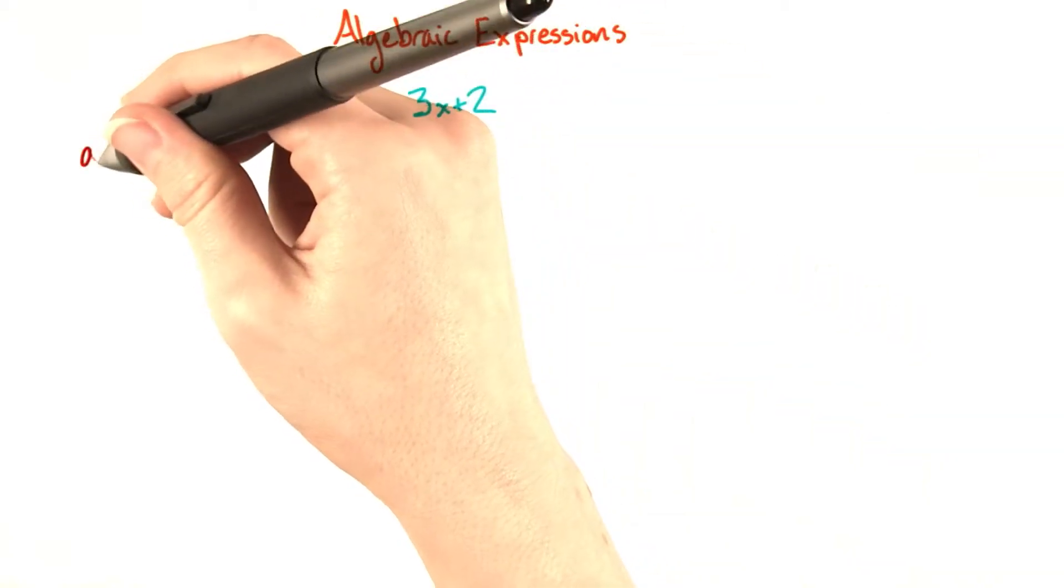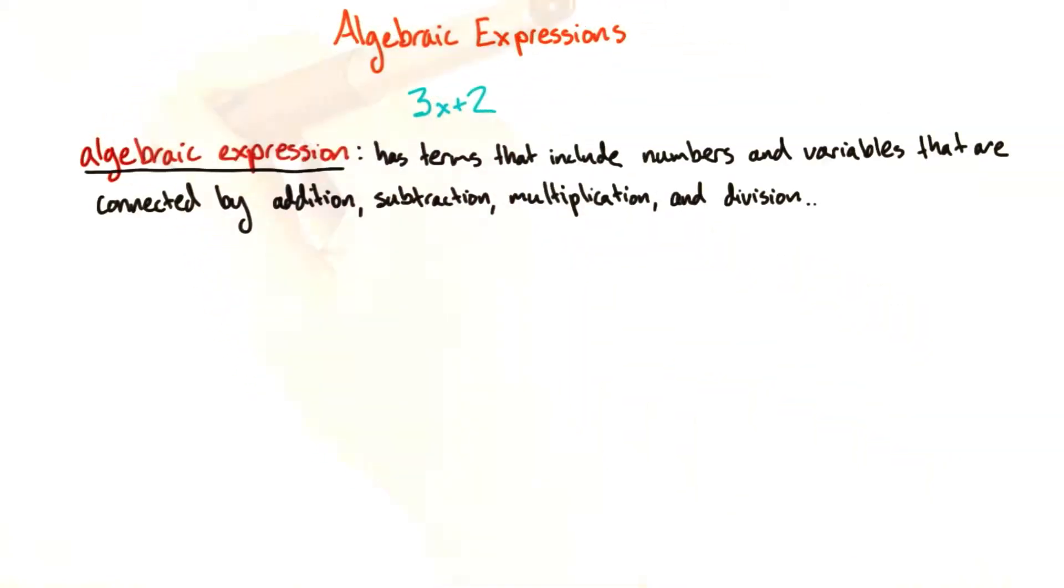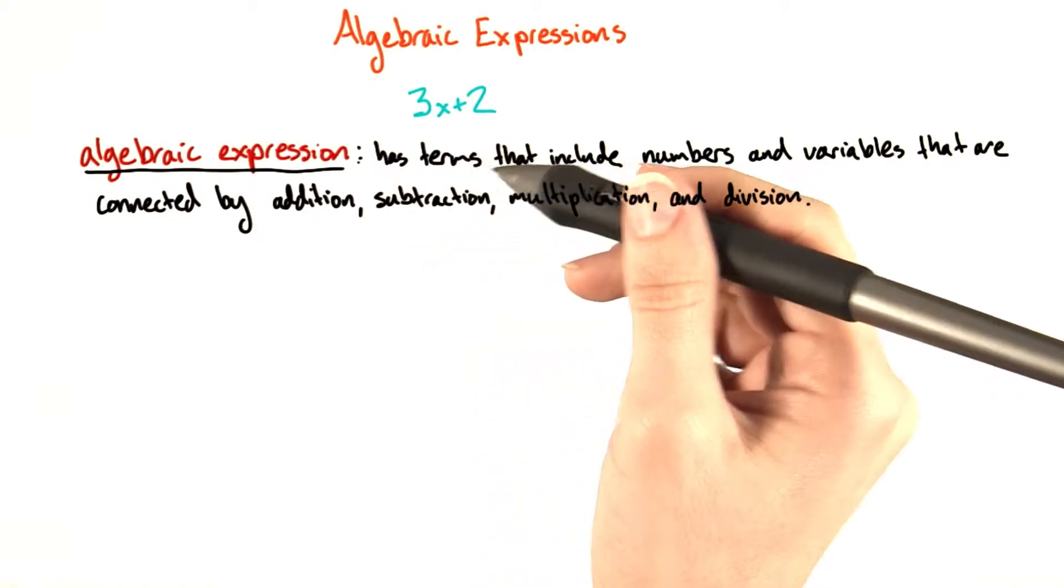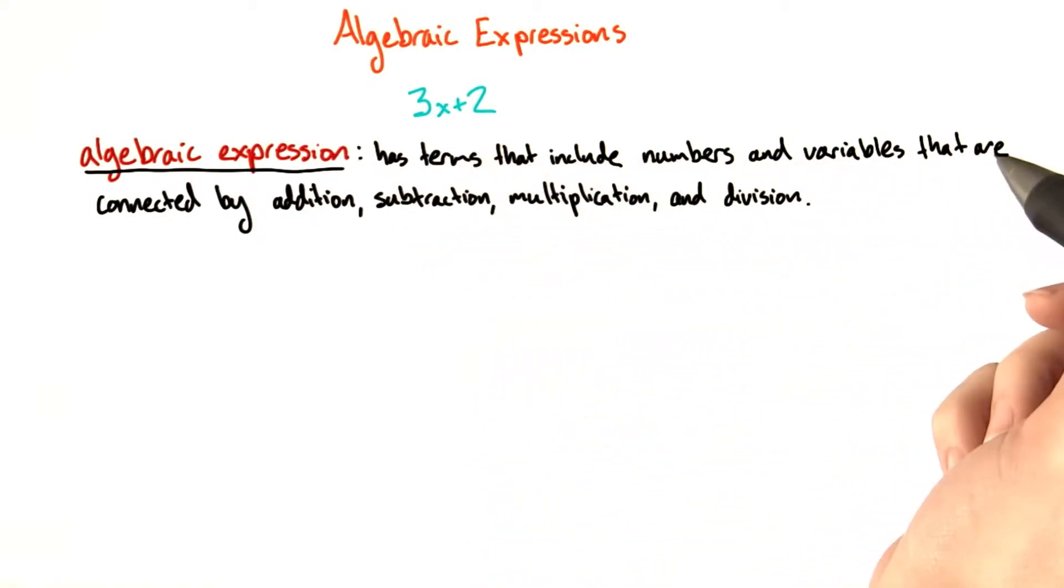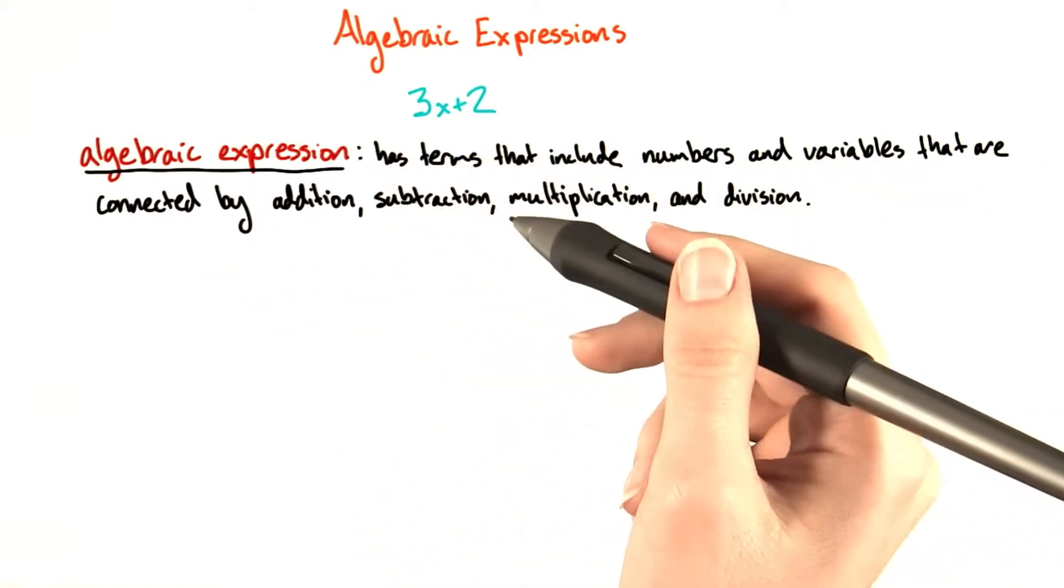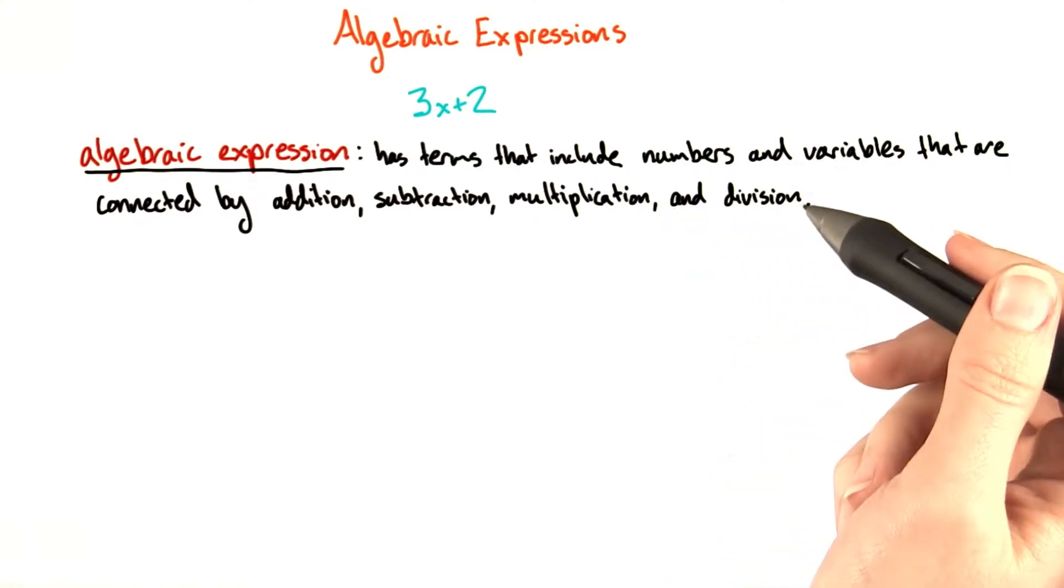3x plus 2 is an algebraic expression. An algebraic expression has terms that include numbers and variables that are connected by addition, subtraction, multiplication, and division.